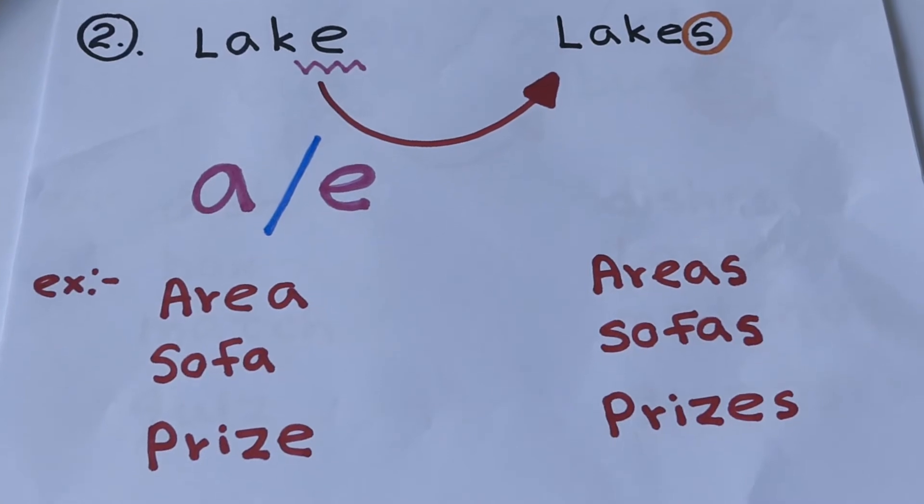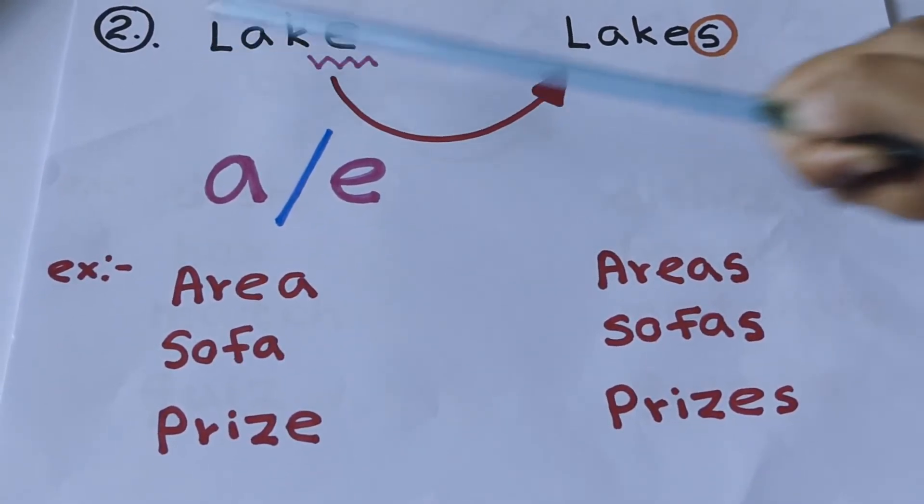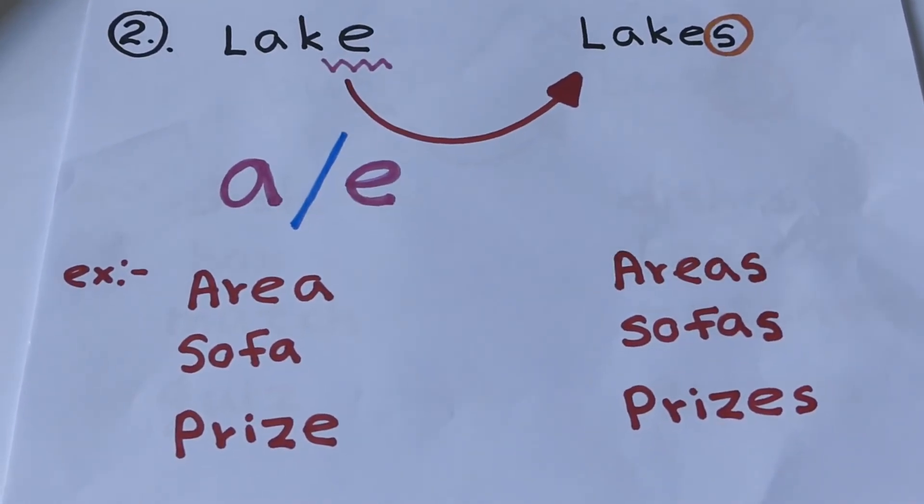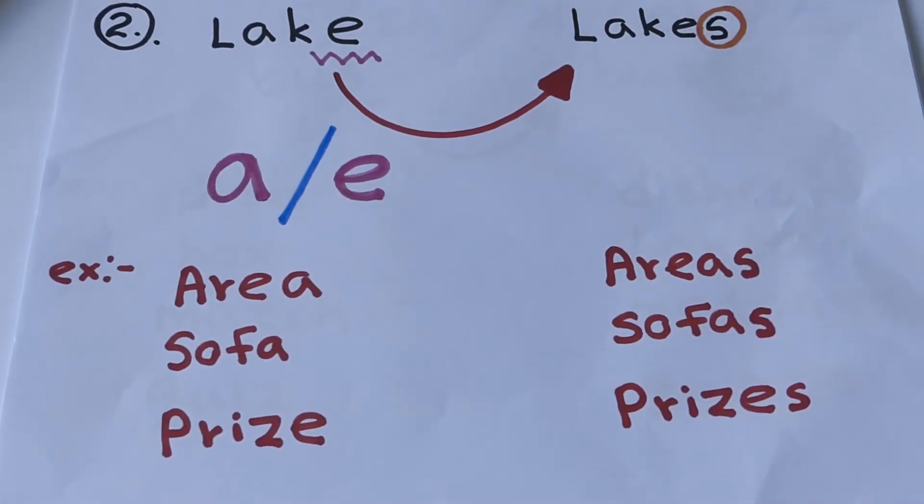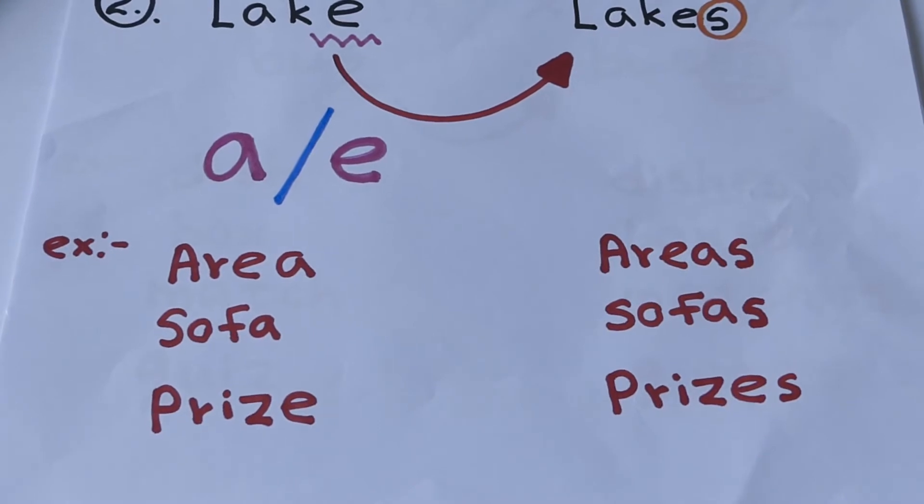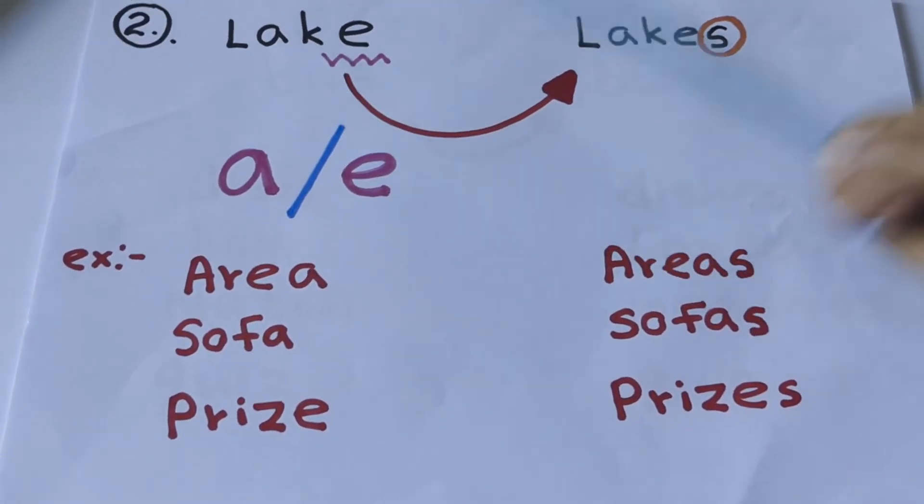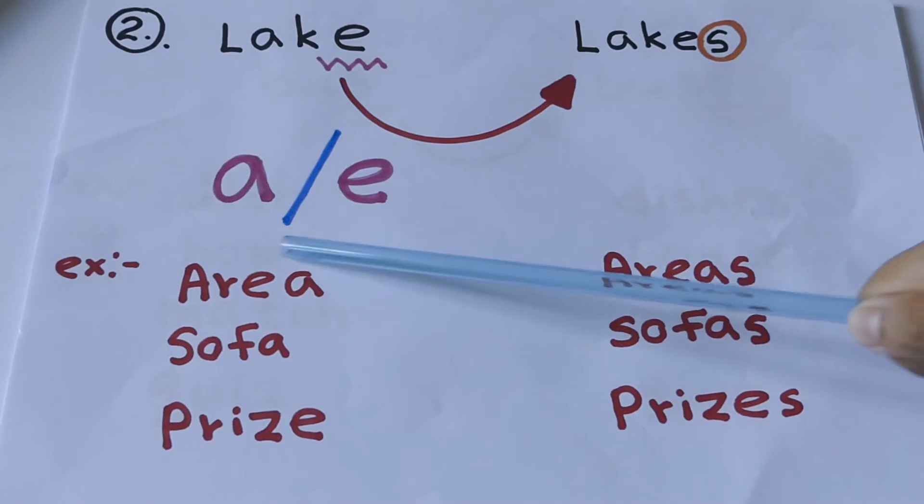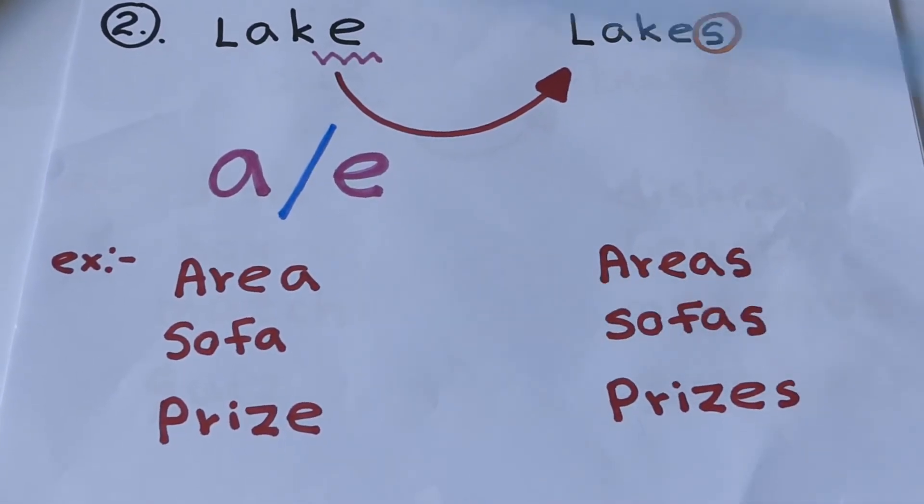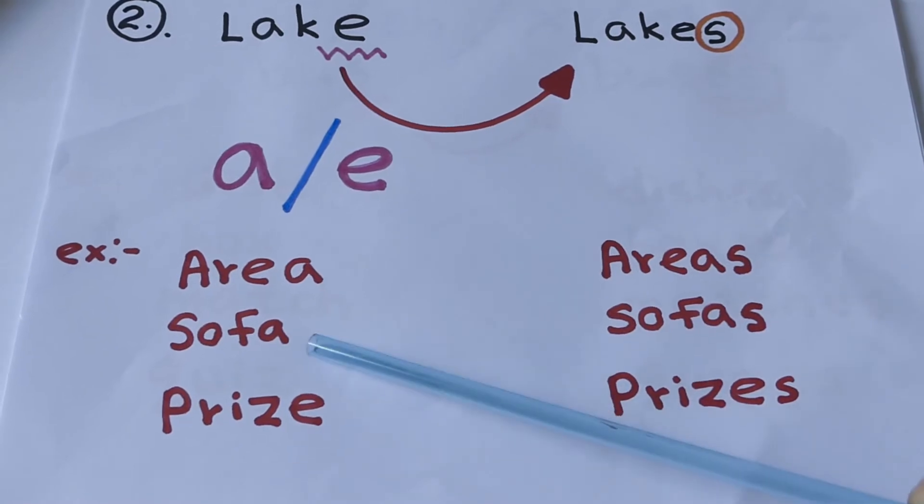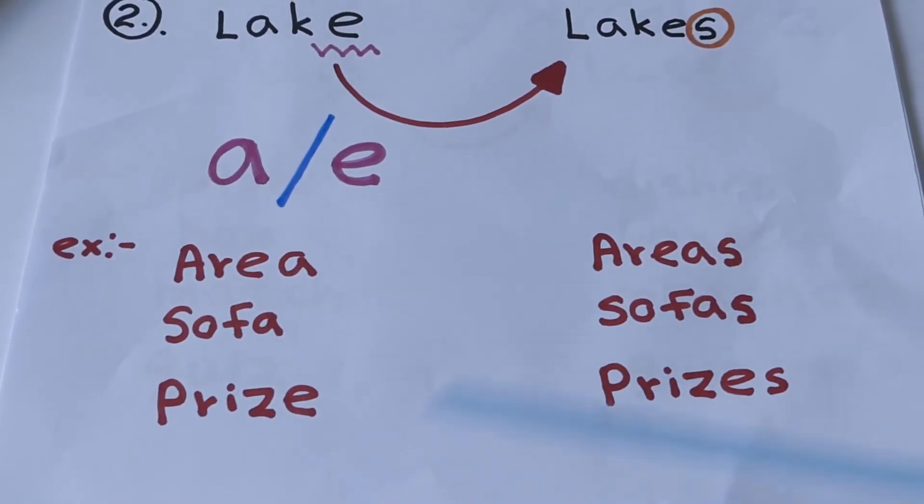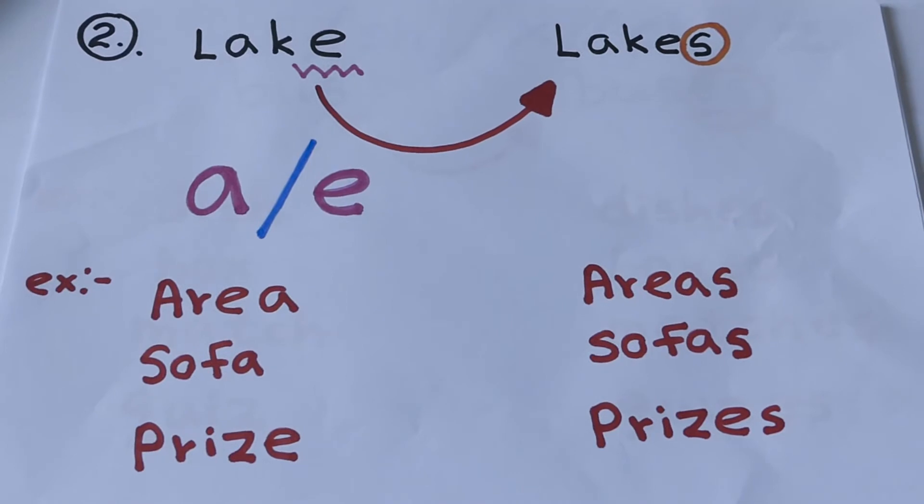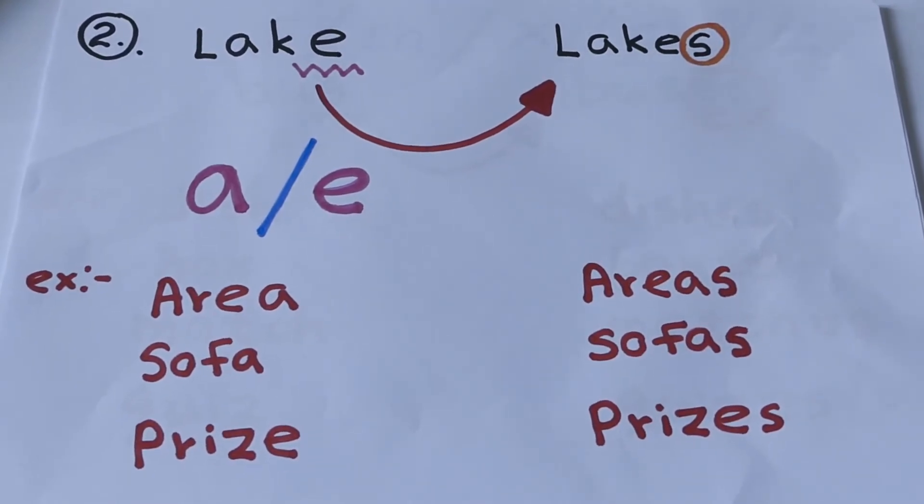What is the second rule? The last letters finish with A, E, I, O, then we add S at the end of the word for plural. Example: lake, lakes. The last letter is E, then we add S. Sofa, sofas. Prize, prizes. Understood? Then let's move to the third rule.